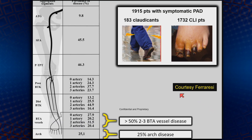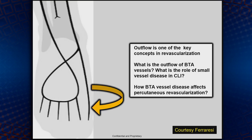This slide shows the extent of below-knee vessel involvement. In a study of close to 2,000 patients, Ferrezzi found that in one quarter of these patients they had arch disease, and in more than 50% they had two to three below-the-ankle vessel disease. Outflow is extremely important — we don't look at outflow often enough. Could this be the reason why tibial vessels are actually going down?